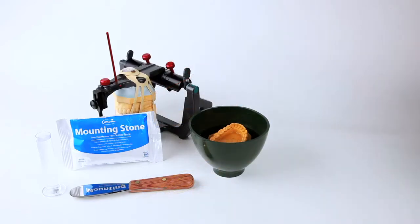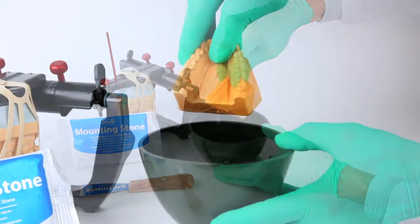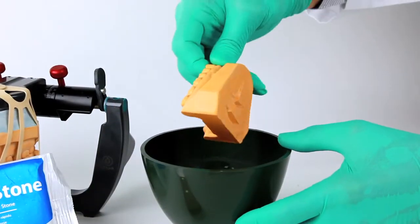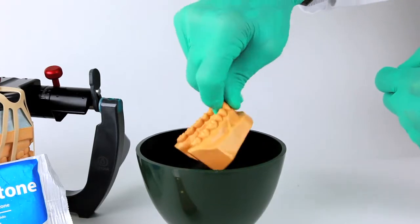To ensure adequate mounting strength, the cast should be soaked in water for 2 to 3 minutes and the base scored or notched to obtain maximum adhesion of the mounting stone to the cast base.